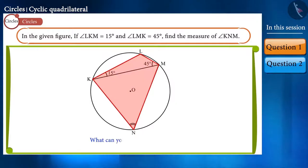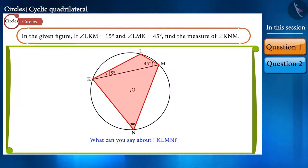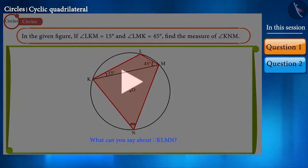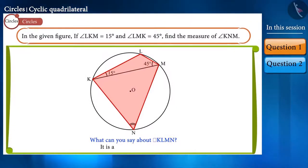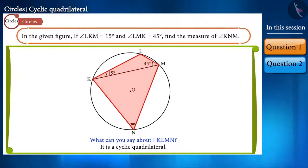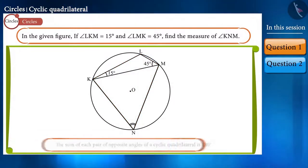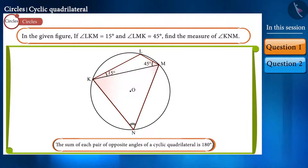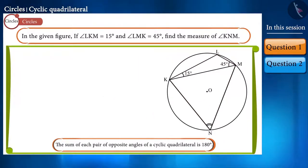Friends, what can you say about the quadrilateral KLMN? You can pause the video to think about the answer. It is a cyclic quadrilateral. We know that the sum of each pair of opposite angles in a cyclic quadrilateral is 180 degrees. Using this theorem we can derive two equations.